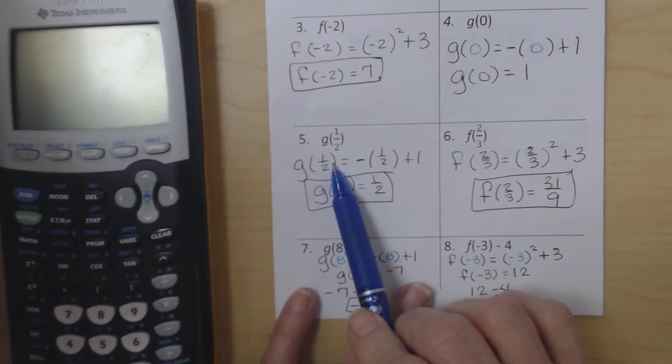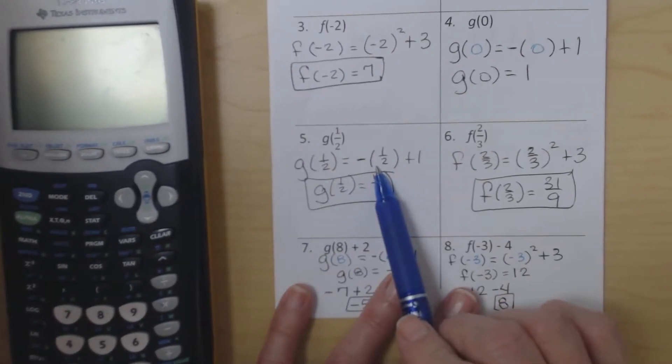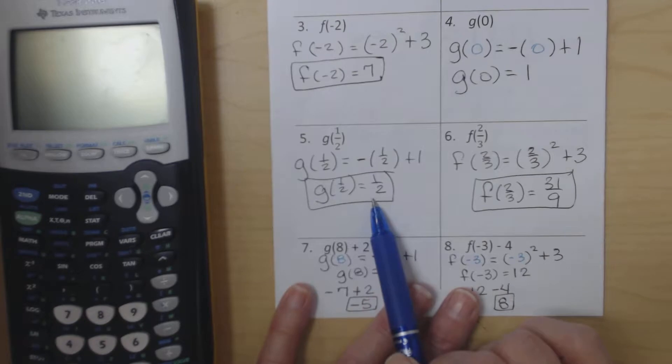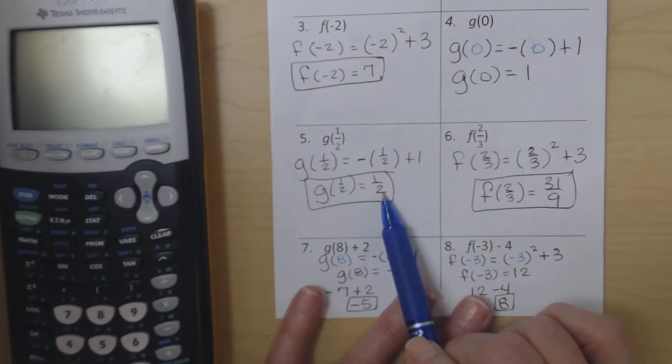So here we have g(1/2). g(1/2) actually ended up being just like number 2, except in number 2 we ended up with 0.5, where here we're putting it in fraction form.